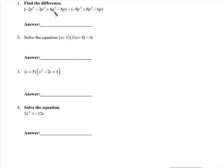This one says find the difference. The difference is just when we take one thing and we subtract another thing. So the difference of 8 and 7 is 1. And we're going to find the difference of this polynomial and this polynomial. But before I can really do that, I have to say I'm subtracting this polynomial. There's essentially a negative 1 being multiplied by this polynomial, so we need to distribute that negative 1.